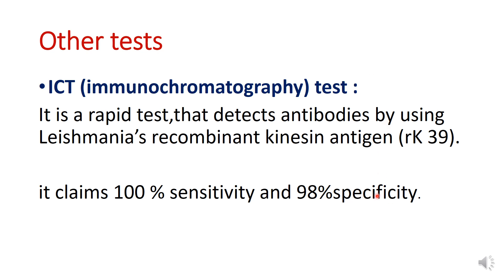So for this test, we have to take patient blood and in serum we can detect antibodies against this antigen of Leishmania parasite. And alternatively, we can do Giemsa staining of bone marrow aspirate. Although we can take liver and spleen aspirate also, but to take spleen aspirate will be risky because spleen is very fragile, soft and enlarged.